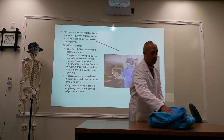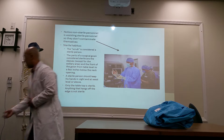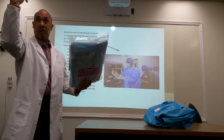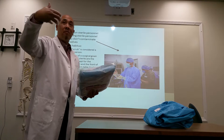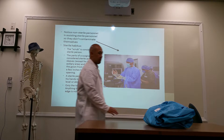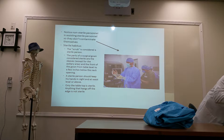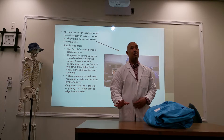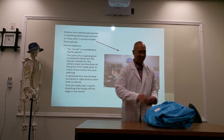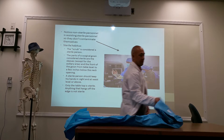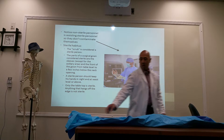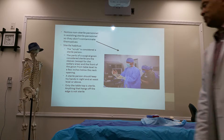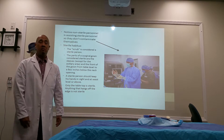The surgical technician opens up the sterile packaging as a circulator, opens the package, and the person wearing sterile gloves grabs the contents and places them on the table. Before opening the instrument tray, you should wipe the table with a disinfectant — 99.9% effective. Only what's on top of the table is considered sterile. Anything that hangs off the edge is not sterile, because non-sterile personnel walking around can brush up against it.